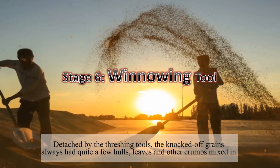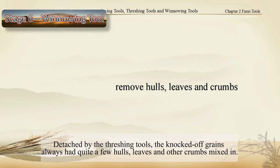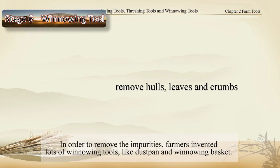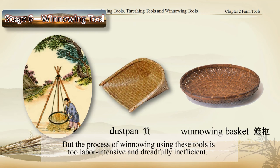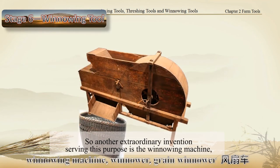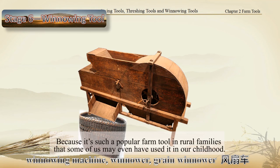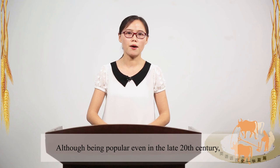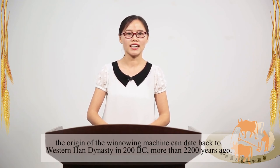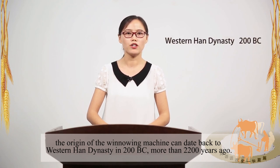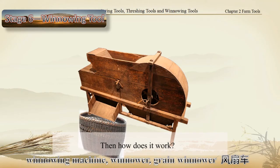Disturbed by the threshing tools, the knocked-off grains always had quite a few hulls, leaves, and other crumbs mixed in. In order to remove the impurities, farmers invented lots of winnowing tools like dustpans and winnowing baskets. But the process of winnowing using these tools is too labor-intensive and dreadfully inefficient. So another extraordinary invention serving this purpose is the winnowing machine, also called the winnower or grain winnower. Although being popular even in the late 20th century, the origin of the winnowing machine can date back to the Western Han dynasty in 200 BC, more than 2,200 years ago. How does it work?